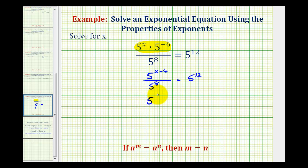So we'd have five to the power of x minus six and then minus eight equals five to the twelfth. This becomes five to the power of x minus 14 equals five to the twelfth.